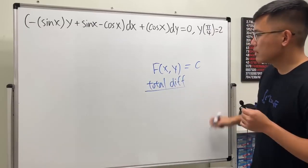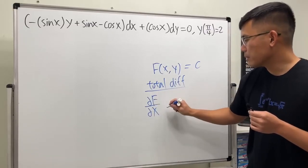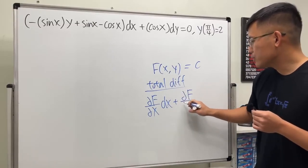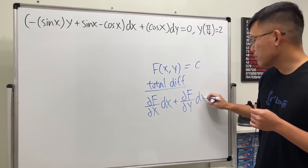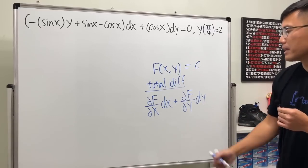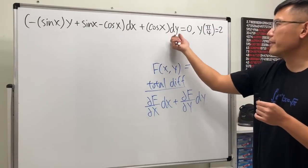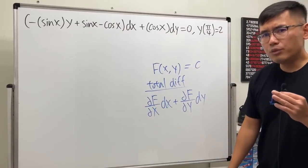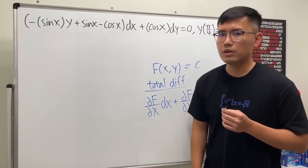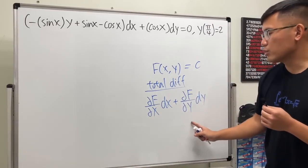To make that happen, we do the partial derivative of capital F with respect to x and multiply by dx, then add the partial of F with respect to y and multiply by dy. Of course if you differentiate a constant you get zero, but we have to make sure that this came from a total differential of some function.